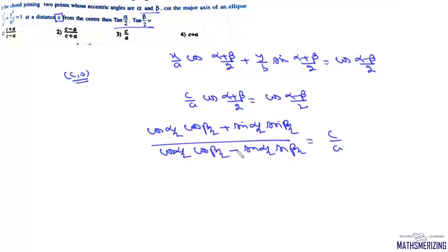we'll use componendo and dividendo. Subtracting, we get 2sin(alpha/2)sin(beta/2) = c - a, and adding, we get 2cos(alpha/2)cos(beta/2) = c + a. Therefore, tan(alpha/2)tan(beta/2) = (c-a)/(c+a), which is option 2.